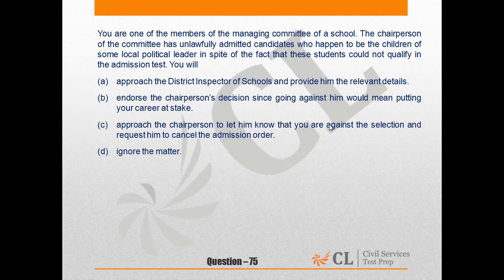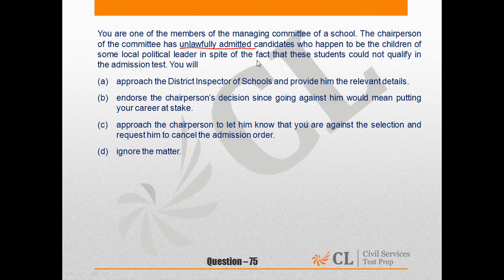You are one of the members of the managing committee of a school. The chairperson of the committee has unlawfully admitted candidates who happen to be the children of some local political leader, in spite of the fact that these students could not qualify in the admission test. The keyword here is 'unlawfully admitted' — so this is both a legal and a moral matter. The chairperson has acted in an illegal, unlawful, and immoral manner, showing clear bias and prejudice in favor of the political leader. Many meritorious students who deserved seats could not get them because those seats were given to children who did not qualify the admission test.